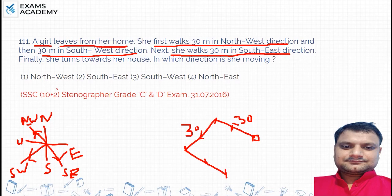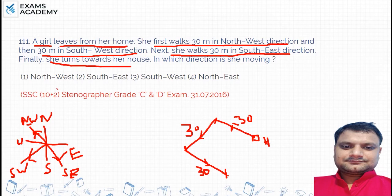So this new position has come — 30 meters in the south-east direction. Now from this position, she finally turns towards her house. This was your house — the girl's starting point. Now this is where she needs to go back.